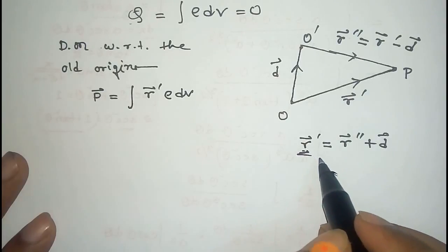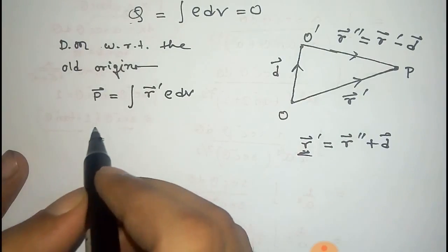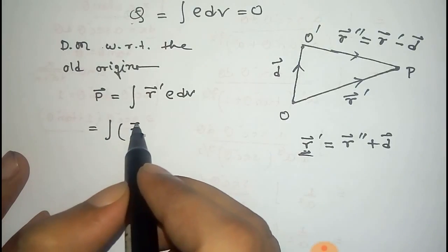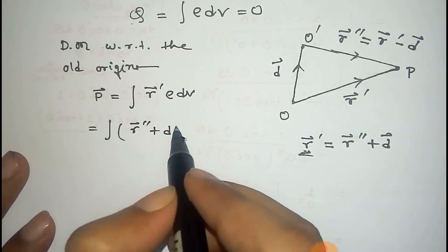From this we get that r vector prime equals r double prime plus d vector. Now replacing r vector prime, we get that equals integral of r double prime plus d vector into ρ dv.